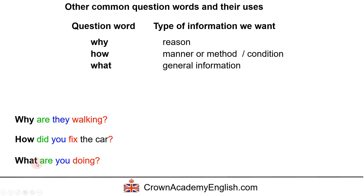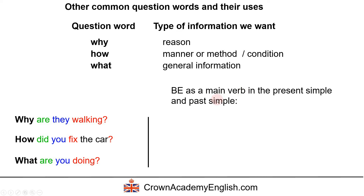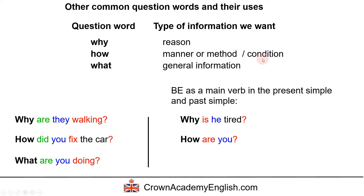And again, let's look at our famous exception — with the verb 'be' as a main verb in the present simple or past simple. 'Why is he tired?' — for what reason is he tired? 'How are you?' — asking about someone's condition, health, or well-being. 'What was it?' — asking general information about it. Here we have the verb 'be' as a main verb: present tense in the first two, and past simple in the last.